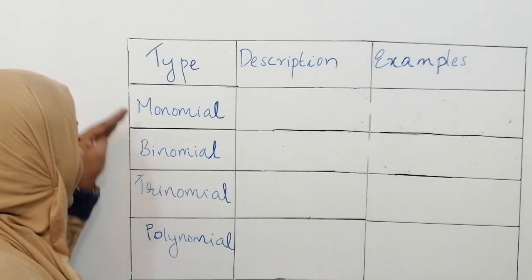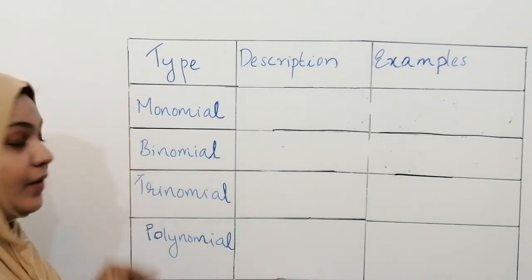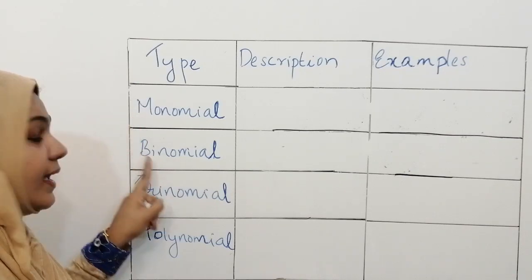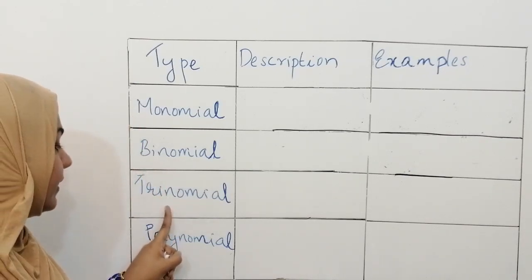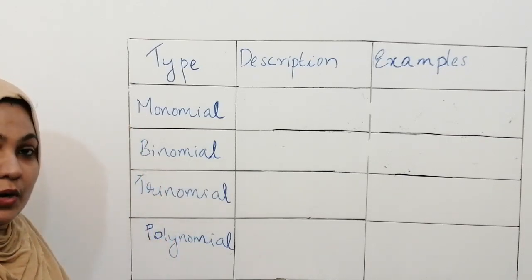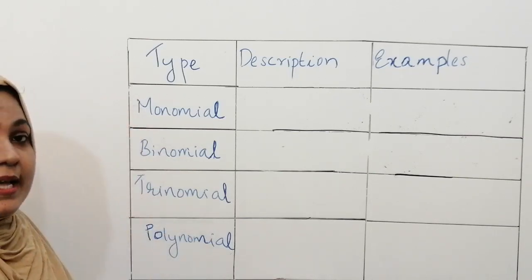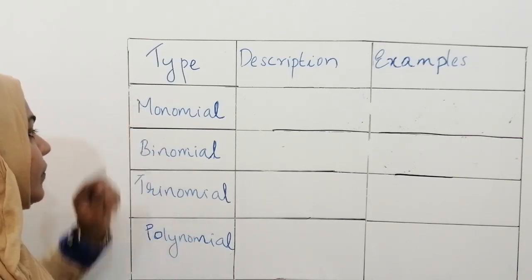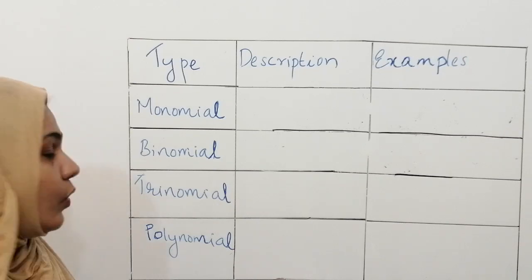Here I wrote four types of algebraic expression. First one is monomial, second one is binomial, third one is trinomial, and the last one is polynomial. Let's see the definition of each algebraic expression. First one is monomial — so what is monomial?